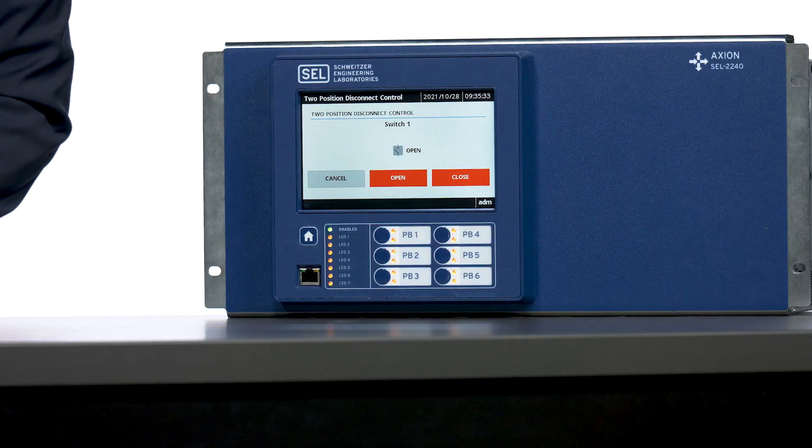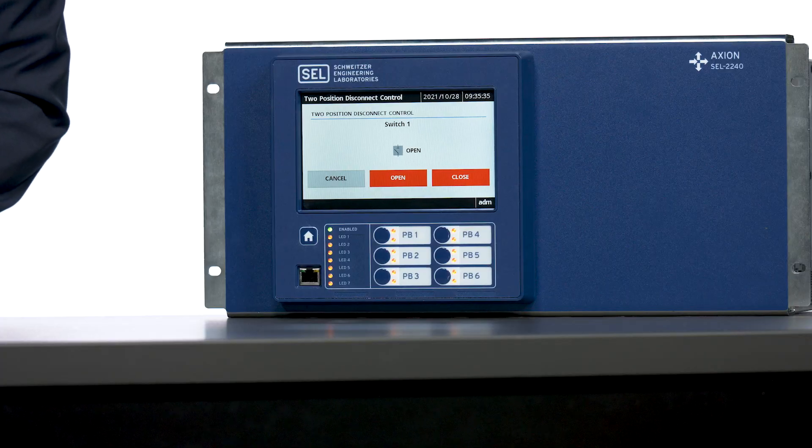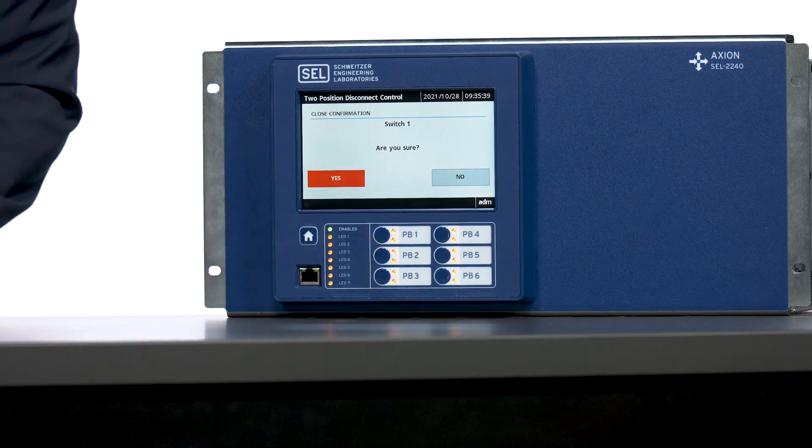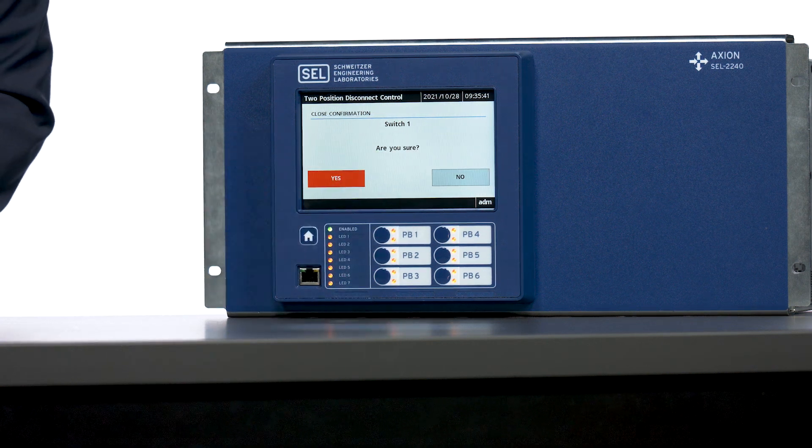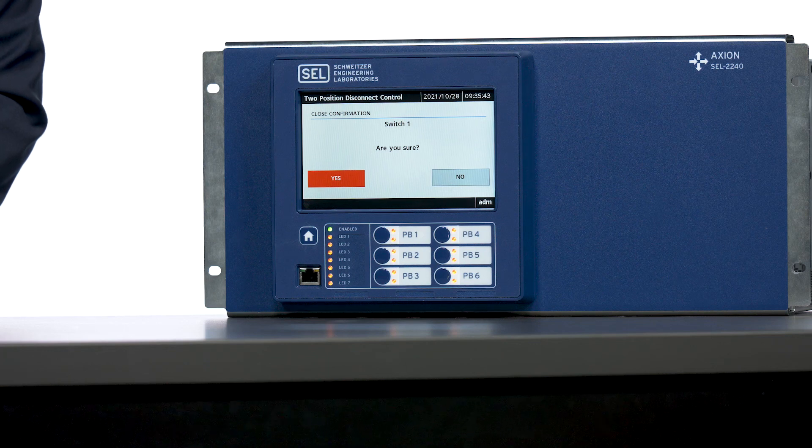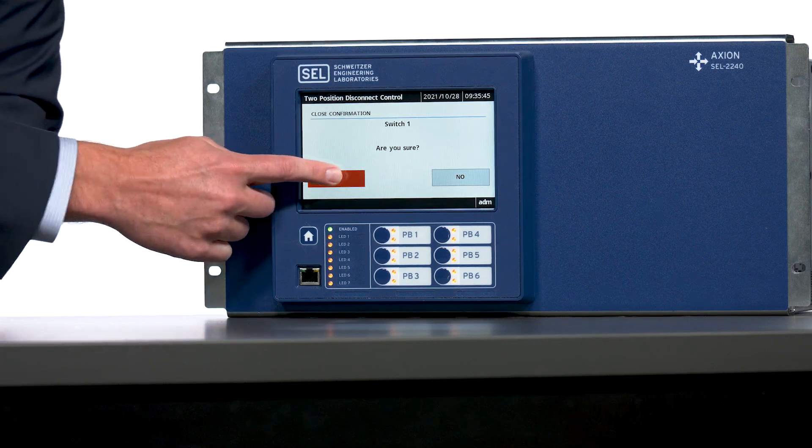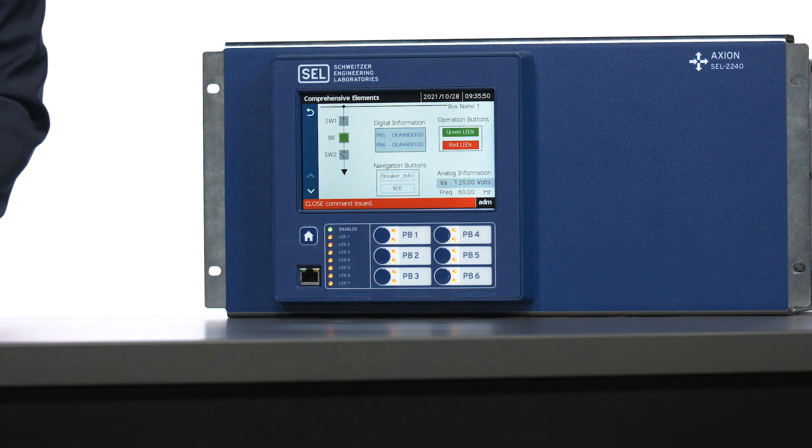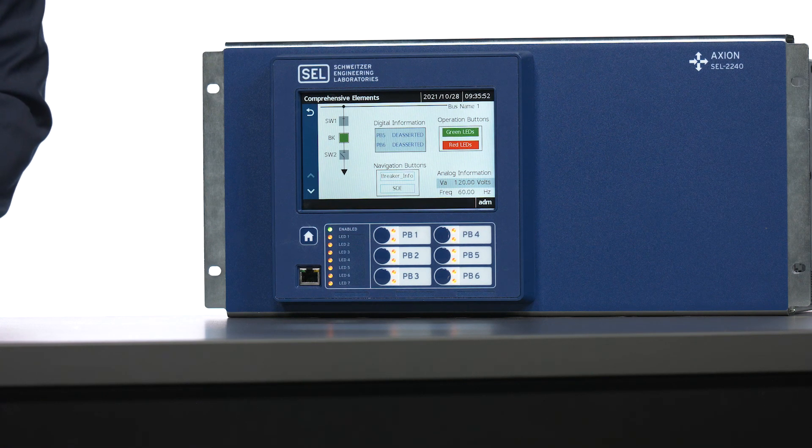Now we can see switch one is in the open state and I want to close that disconnect switch. I'm going to press the close button. Where I'm prompted, close confirmation, switch one, are you sure? And I'm going to say yes. There we can see our switch one transition from the open to the in progress and then to the closed state.